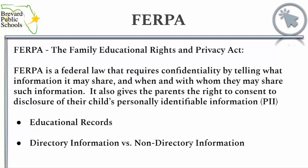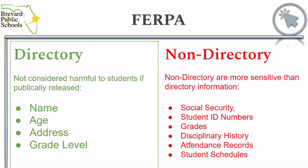FERPA is the Family Educational Rights and Privacy Act. FERPA is a federal law that requires confidentiality by telling what information it may share and when and with whom they may share such information. It also gives parents the right to consent to disclosure of their child's personally identifiable information. Directory information is not considered harmful to students if publicly released. This includes name, age, address, and grade level. Non-directory information is more sensitive than directory information. These include social security numbers, student ID numbers, grades, disciplinary history, attendance records, and student schedules.